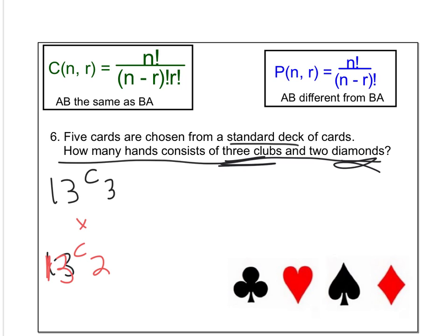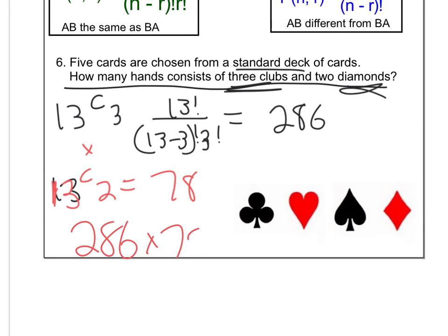So what I'm going to do then is I'm going to multiply those two. So 13 choose 3, I can multiply this out. I get 286. That's how many different ways I can get 3 clubs out of the 13. Then I do the same thing with the diamonds, and I get 78. So how many different ways can I get 3 clubs and 2 diamonds? Well, that's 286 times 78. So that's going to be 22,308 possible scenarios.